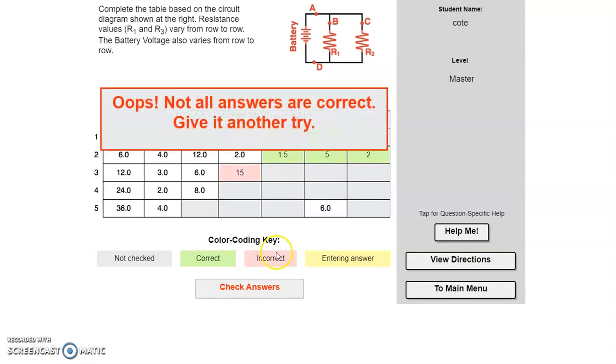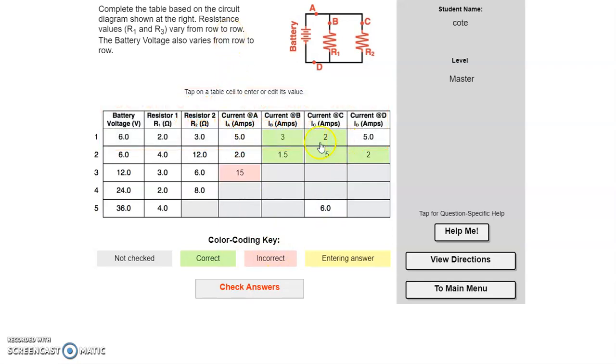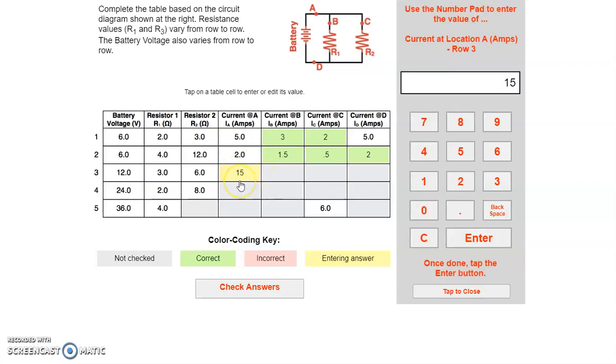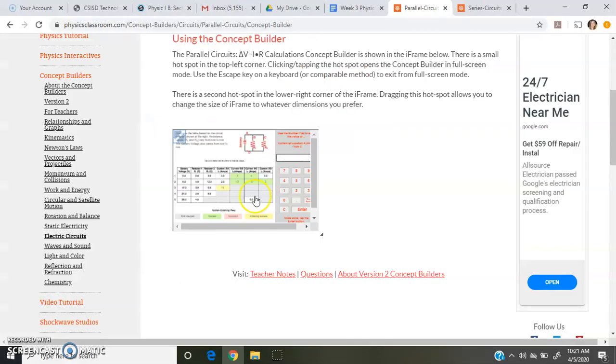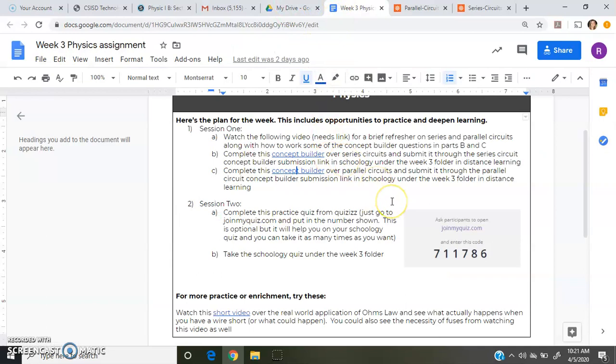Now I'm going to hit check answers and you'll see that it says they're not all correct. But the ones in green, those are the ones I got right. The ones that are kind of in this color are the ones I didn't do. And then the one here, of course, that tells you that it's wrong. So you just keep working on it until you get them all right. Okay, so I'm going to exit out. You guys will do that yourself. If you have any questions, contact your teachers.